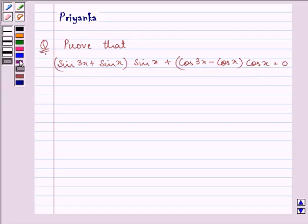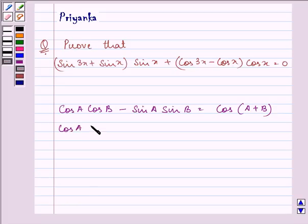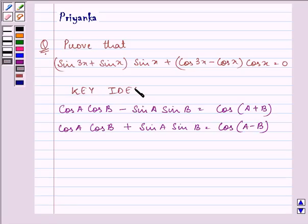Before proceeding, we should be well versed with the identities that will be helping us in the question. It says, cos A cos B minus sin A sin B can be written as cos (A plus B), whereas cos A cos B plus sin A sin B can be written as cos (A minus B). The knowledge of these identities are the key ideas that are going to help us in our proof.